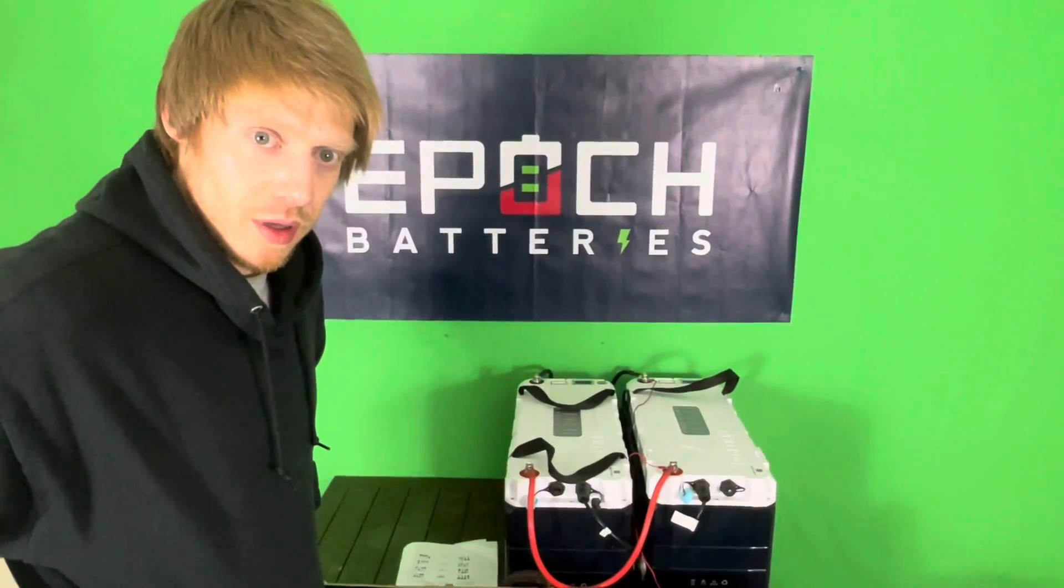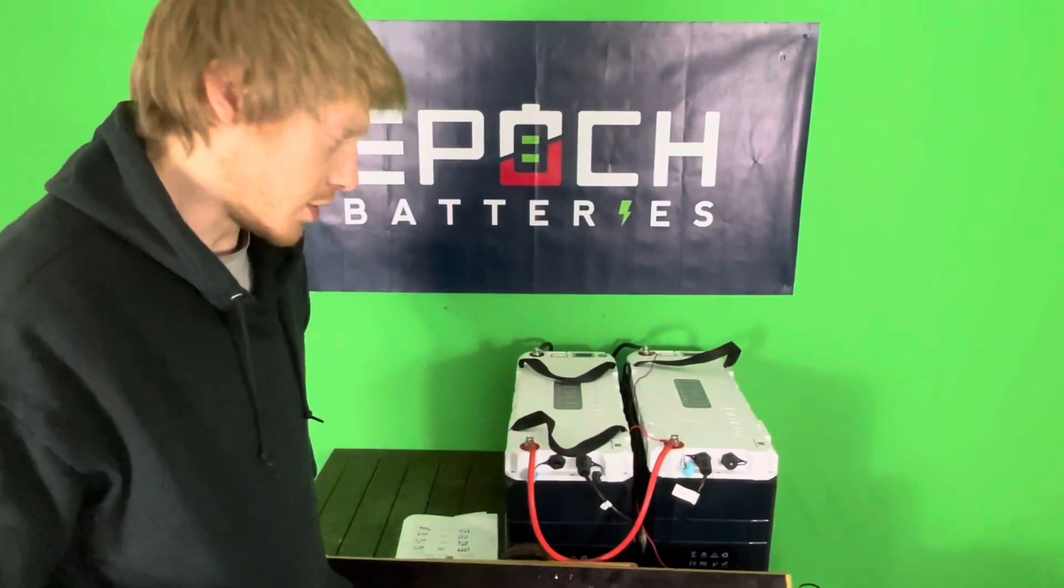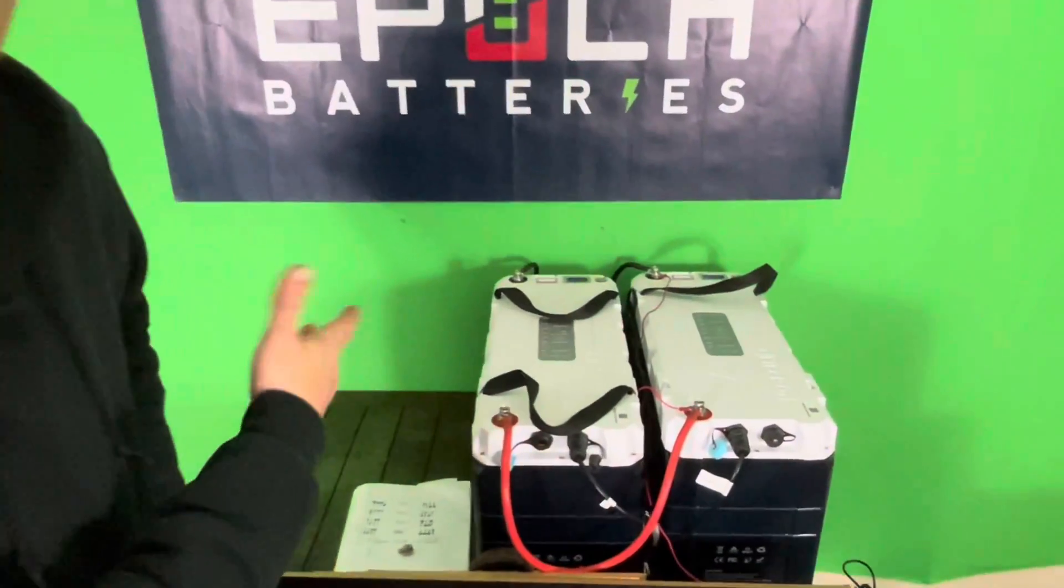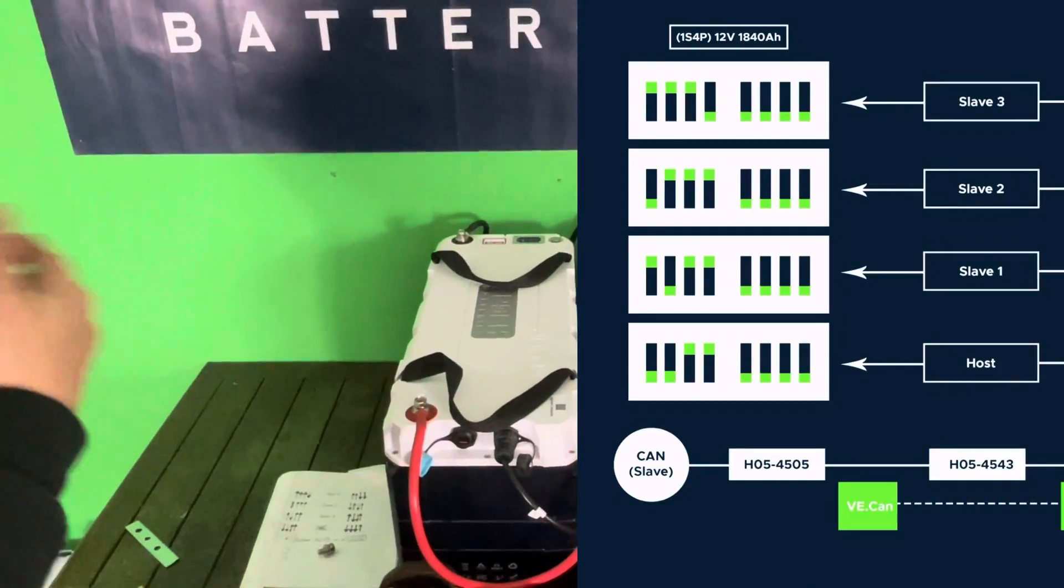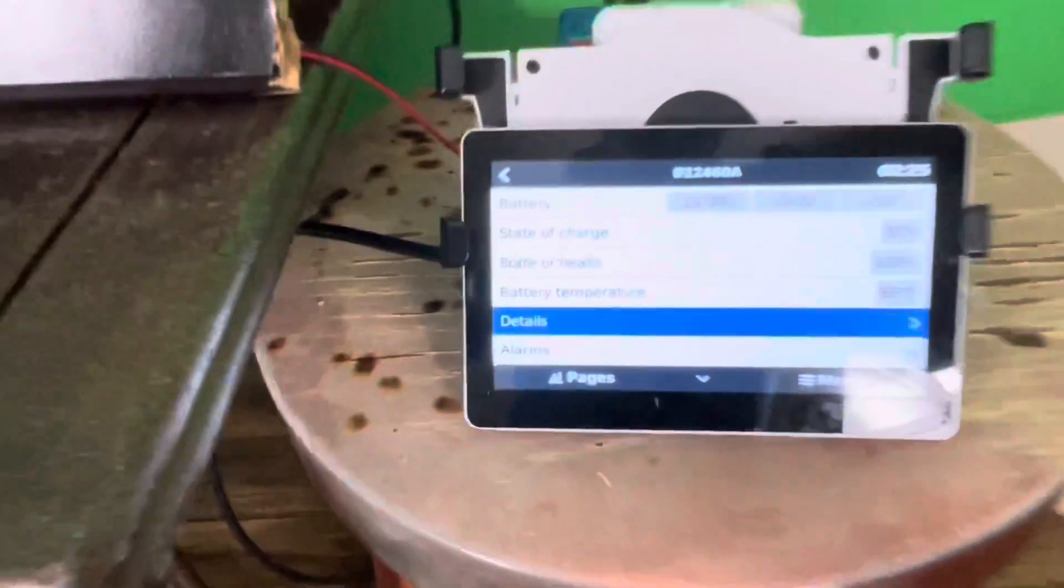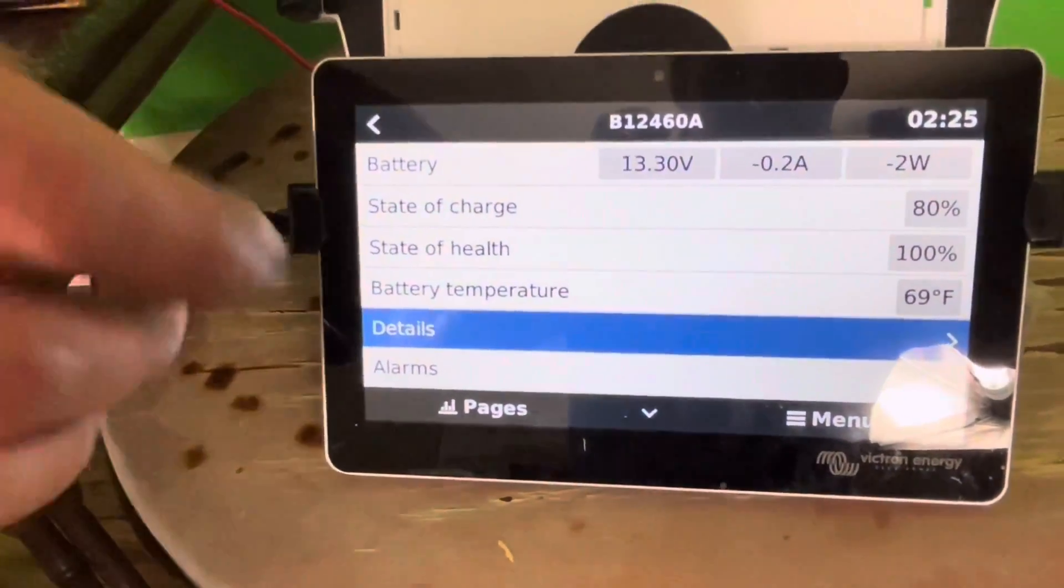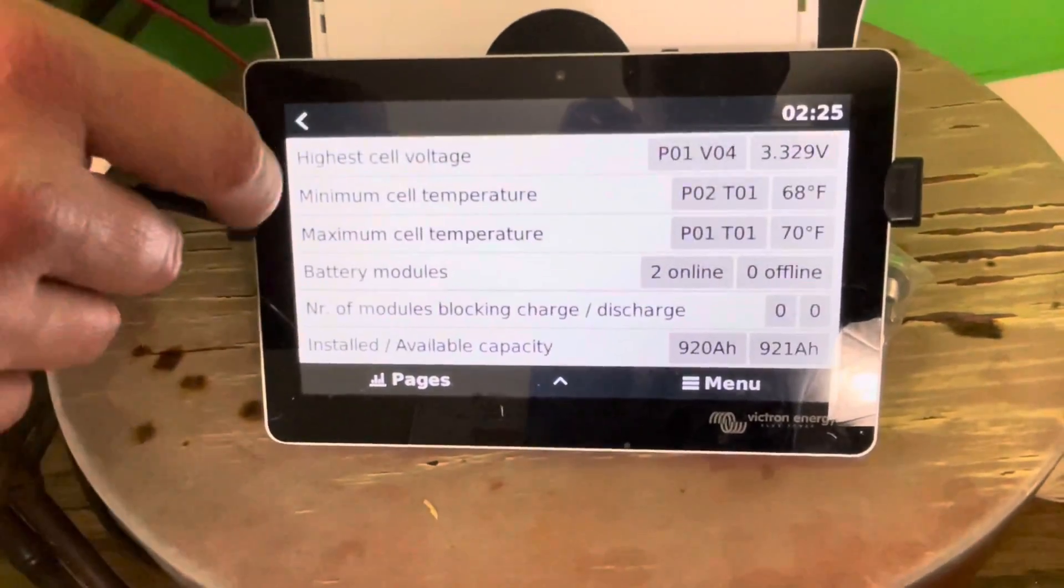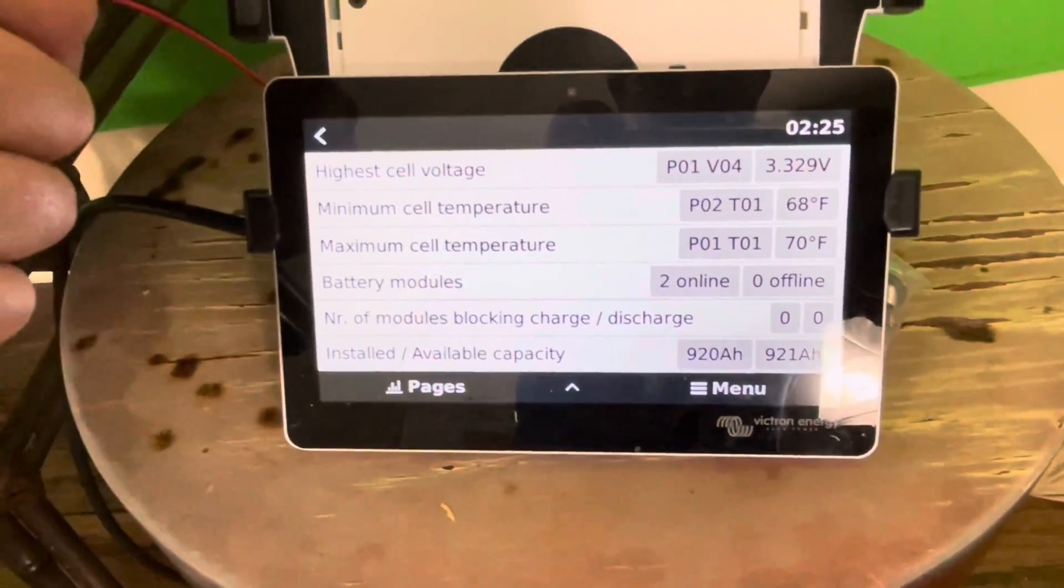Alright, so now we're on to the 1S2P. You can see here positive to positive, negative to negative. Dip switch settings, and it can be confirmed over here on the Cerbo. You can see a 12-volt battery, two batteries. You can see we have 920 amp-hours.